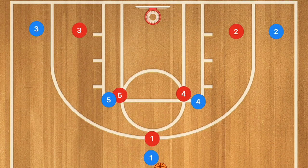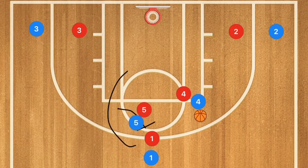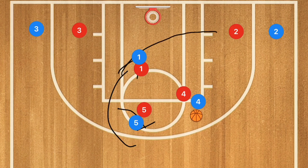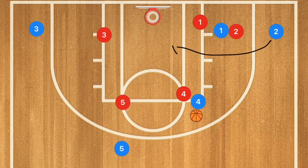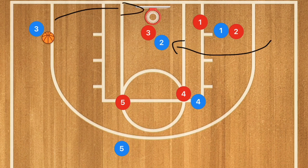This next play is a horns offense against a man-to-man defense. Player one needed to get the ball into the high post, whether to player five or player four. If he got it to player four, player five set a back screen on player one, and player one cut to the basket for a layup. If he wasn't open, he continued his cut through the key and back screened for player two on the opposite side. Player two then cut to the basket — in this case for a layup — but if player three played help defense, it would be a kick-out for a three-point shot.